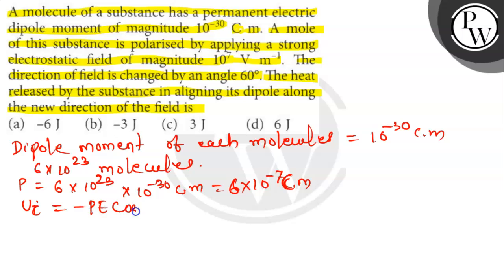which is minus 6 into 10 to the power minus 7 into 10 to the power 7 cos 0 degree, which is minus 6 joules.